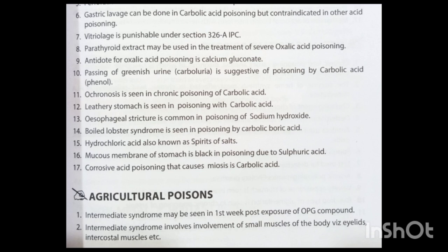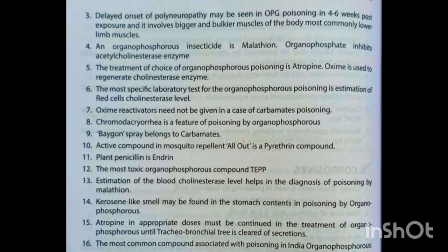Intermediate syndrome may be seen in the first week post-exposure to organophosphorus (OP) compound poisoning. It involves the small muscles of the body, i.e., eyelids, intercostal muscles, etc. Delayed onset polyneuropathy may be seen in OP poisoning at 4 to 6 weeks post-exposure, and it involves the bigger and bulkier muscles of the body, most commonly the lower limb muscles. An organophosphorus insecticide is malathion. Organophosphate inhibits acetylcholinesterase enzyme.